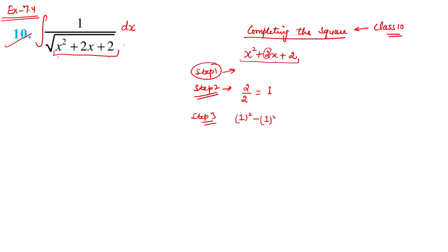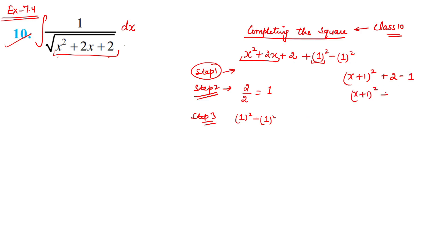So we have x² + 2x + 2. We add 1² and subtract 1². This gives us x² + 2x + 1², which becomes (x + 1)². So the expression becomes (x + 1)² + 2 - 1, which is (x + 1)² + 1. We can write the integrand as 1/√[(x+1)² + 1²] dx.